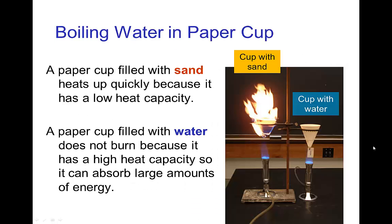We can demonstrate this in the lab. Take a paper cup full of sand and a paper cup full of water and put them both under Bunsen burners. The cup with the sand doesn't take much energy to raise its temperature, so that paper cup bursts into flames. Meanwhile, the cup with water can absorb an enormous amount of energy and only raises its temperature by a little bit.